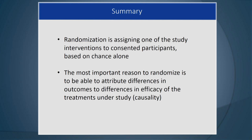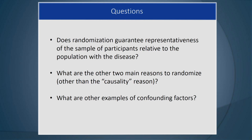That's it for this segment. In summary, randomization is assigning one of the study interventions to consented participants based on chance alone. The most important reason to randomize is to be able to attribute differences in outcomes to differences in efficacy of the treatments — that's the causality reason. Questions for you: Does randomization guarantee representativeness of the sample relative to the population with the disease? What are the other two main reasons to randomize? And what are other examples of confounding factors? Thank you for watching.